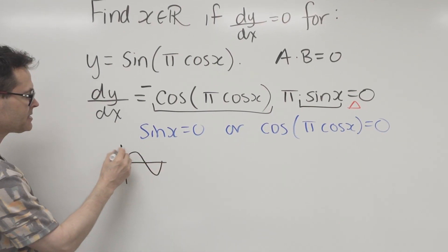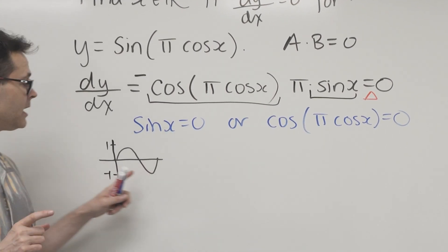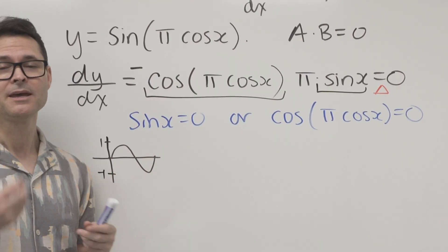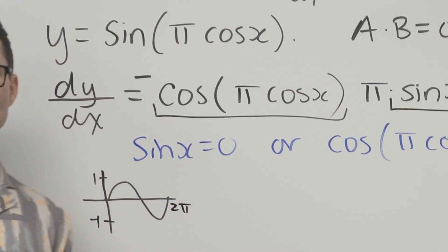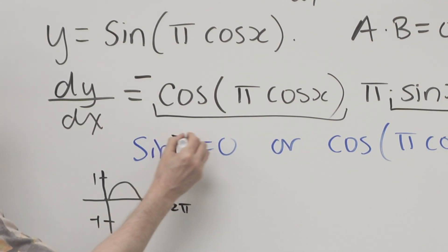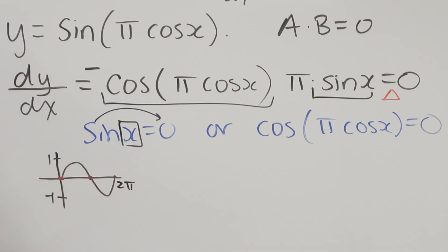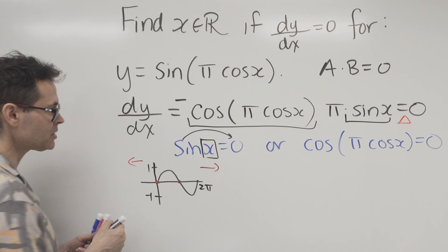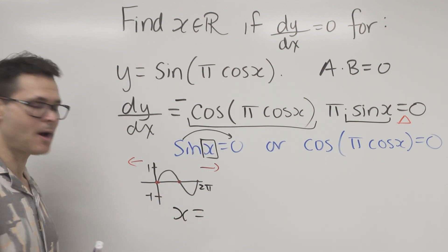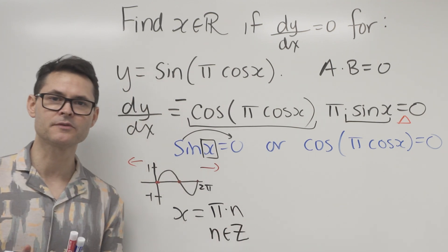I'll use the sine wave. It maximizes at one, minimizes at negative one, and takes one full cycle — from zero to 2π radians (360 degrees) — to complete itself. Remember, derivative formulas in trig assume radian measure. Sine equals zero at zero, π, 2π, 3π, 4π — in both directions. So the general solution is x = πn, where n is an integer.